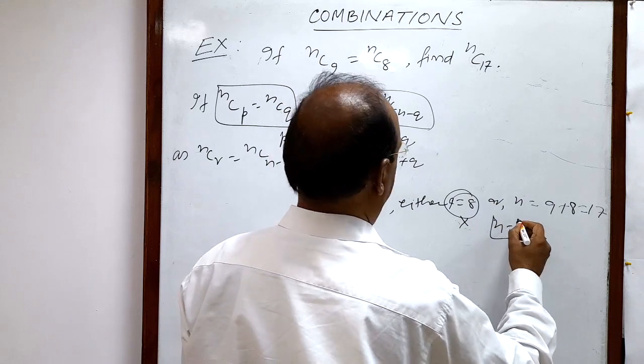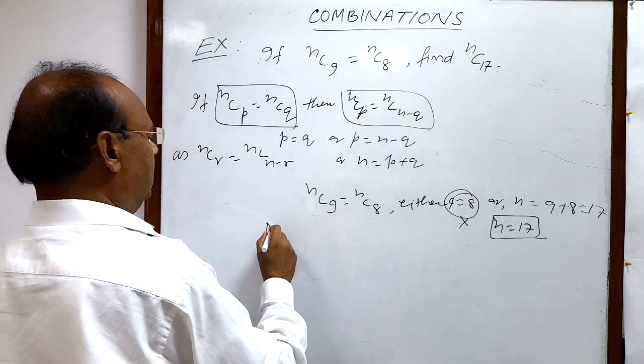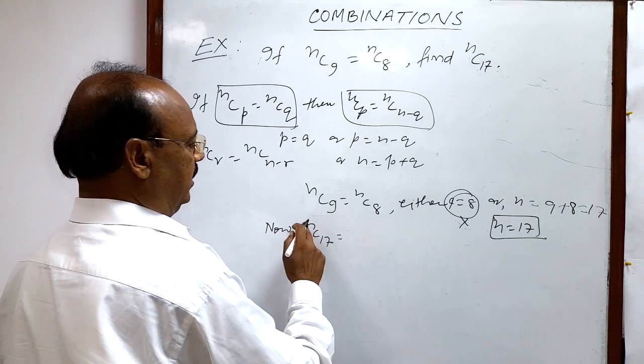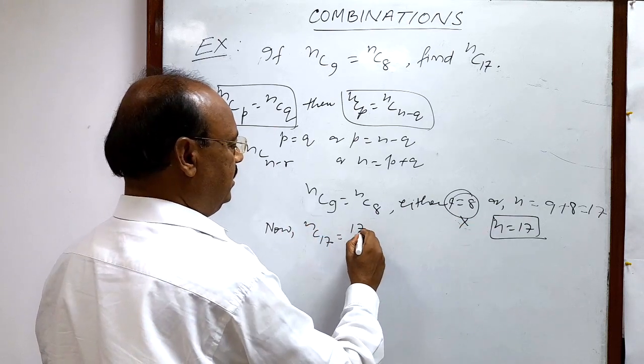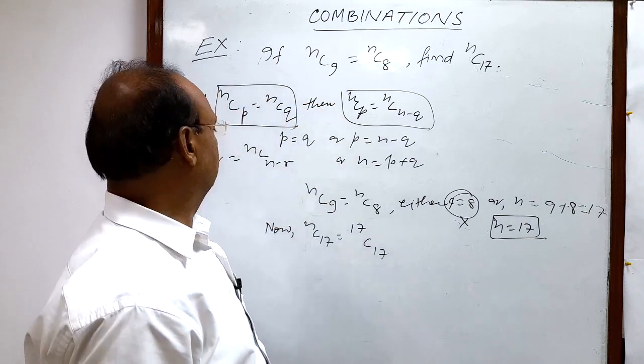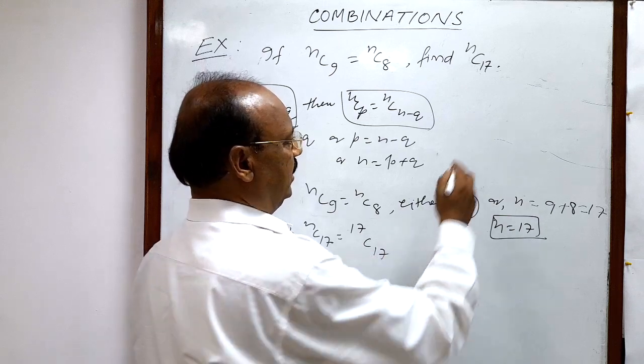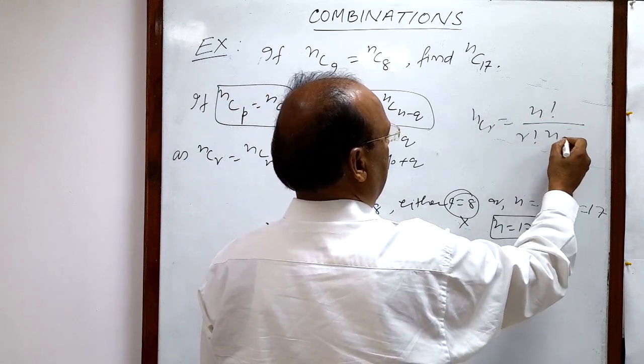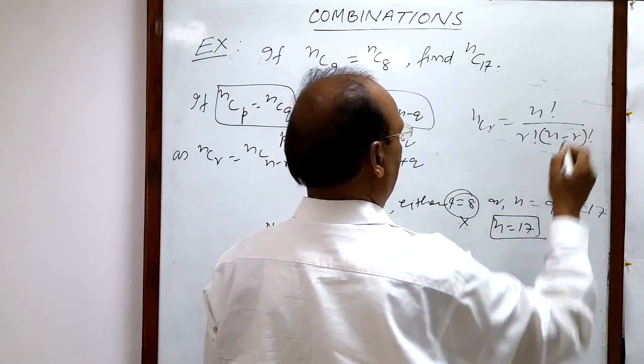Now we have to calculate nC17, and n is 17 here. So 17C17. Now we'll use the formula here: nCr is equal to n factorial by r factorial times (n-r) factorial.